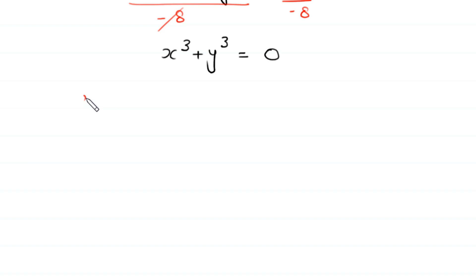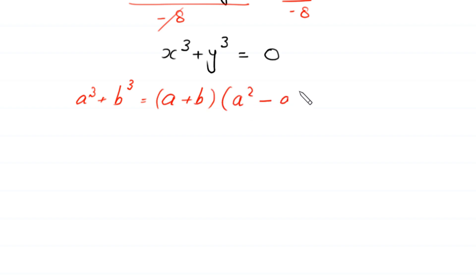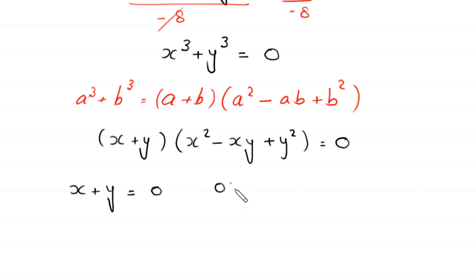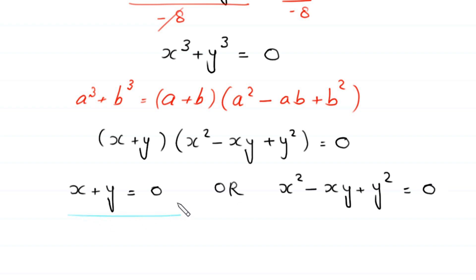Using the algebraic identity a³ + b³ = (a + b)(a² - ab + b²), we factor x³ + y³ to get (x + y)(x² - xy + y²) = 0. From here, either x + y = 0, or x² - xy + y² = 0. The first case gives us x + y = 0 as our first solution.